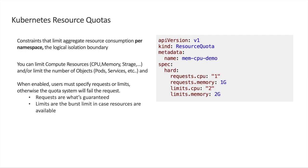Here on the right, we have an example resource quota manifest named mem-cpu-demo. It has requests for one CPU and one gigabyte of RAM — a request is what will be reserved and guaranteed for the namespace. Then it has a limit for two CPUs and two gigabytes of RAM. A limit is what we can burst to, assuming we have resources available in the cluster.